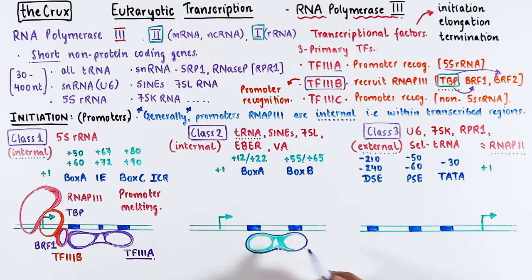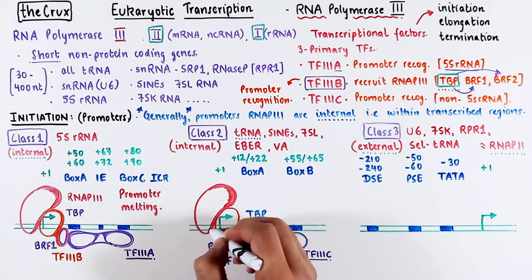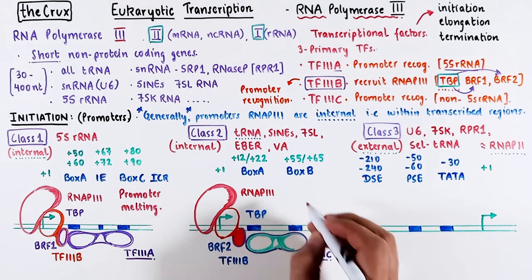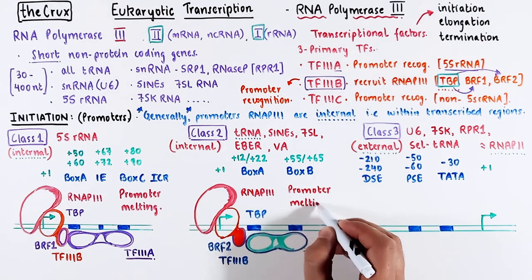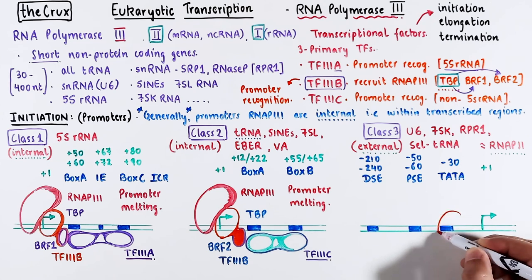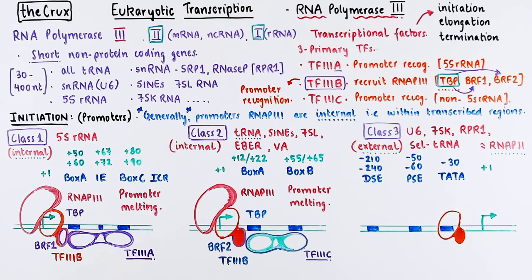Class 2 initiation is similar, but instead, TF3C binds the promoter boxes. Factor C also then recruits TF3B to the promoter, but instead, this recruitment is through the BRF2 subunit. Again, RNA polymerase 3 is then loaded, leading to the promoter melting and the continuation of transcription.